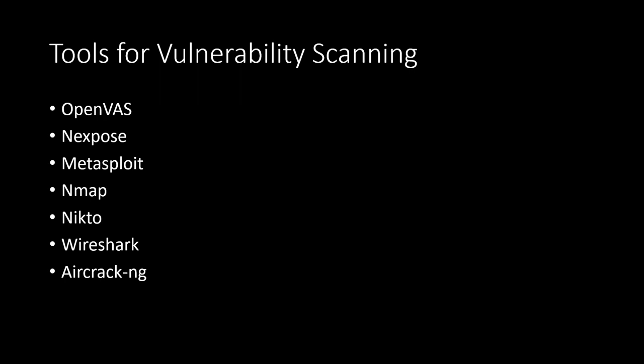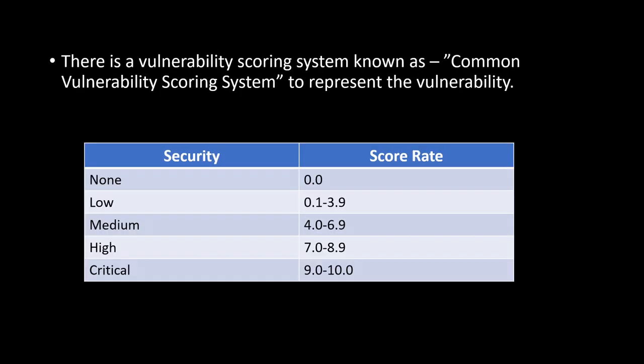The next thing to understand is that we have a scoring system for vulnerabilities. Once you go to CVE — Common Vulnerabilities and Exposures — which is a database where all vulnerabilities are reported, all vulnerabilities have a scoring system. If a vulnerability has a security level of none, the score is 0.0. A low severity vulnerability scores between 0.1 and 3.9. Critical vulnerabilities like EternalBlue have a score of 9.0 to 10.0. Similarly, NotPetya and other ransomware have scores of 9.0 to 10.0.